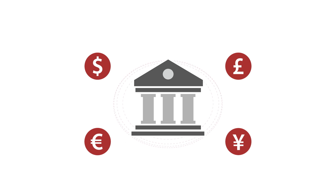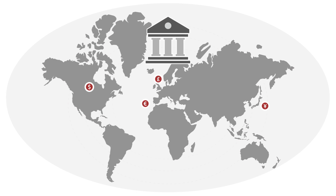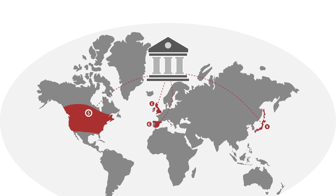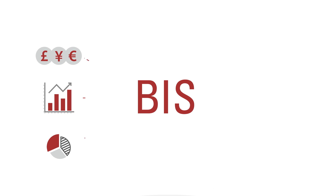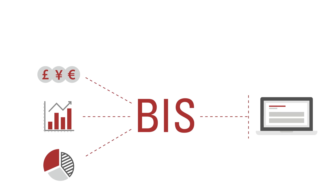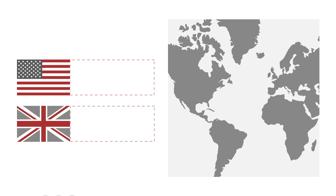As international banks provide credit to borrowers in different countries, they are exposed to the risk of investing in each of them — so-called country risk. To measure banks' exposure to this risk, you can use the consolidated banking statistics compiled by the BIS. Our data show how much credit banks of a given nationality have extended to borrowers in more than 200 countries.